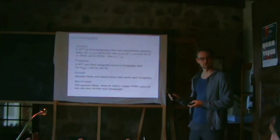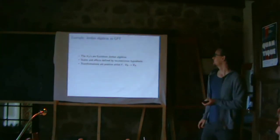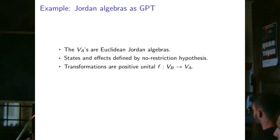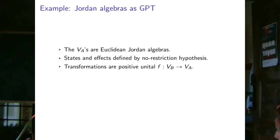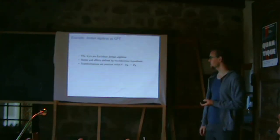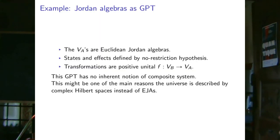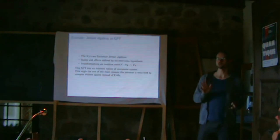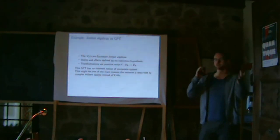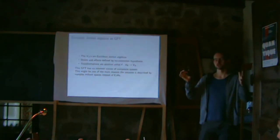Almost any reconstruction assumes local tomography because it's one of the few principles distinguishing complex quantum theory from real quantum theory. Another GPT example: taking Euclidean Jordan algebras as the order unit space with the no-restriction hypothesis, one gets a valid GPT sharing many properties with quantum theory. However, defining tensor products for arbitrary Jordan algebras is hard, and applying local tomography implies that all systems must be complex matrix algebras — the only Jordan algebras with proper tensor products satisfying local tomography.